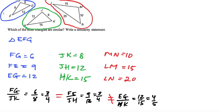Perhaps it's similar to the green one, or perhaps the blue one. Let's compare it to the blue one first. FG/MN = 6/10, which reduces to 3/5. FE, that's the median one, over LM is 9/15, which also reduces to 3/5. So that certainly looks good again.